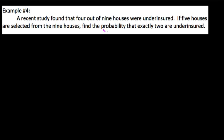So just like my last video, if you watched the last one, the very first thing we want to do is read the last sentence and write down what it is that we're trying to find. And in this instance, we're saying, okay, find the probability that exactly two houses are underinsured. If we select five houses from the nine, we want two underinsured.